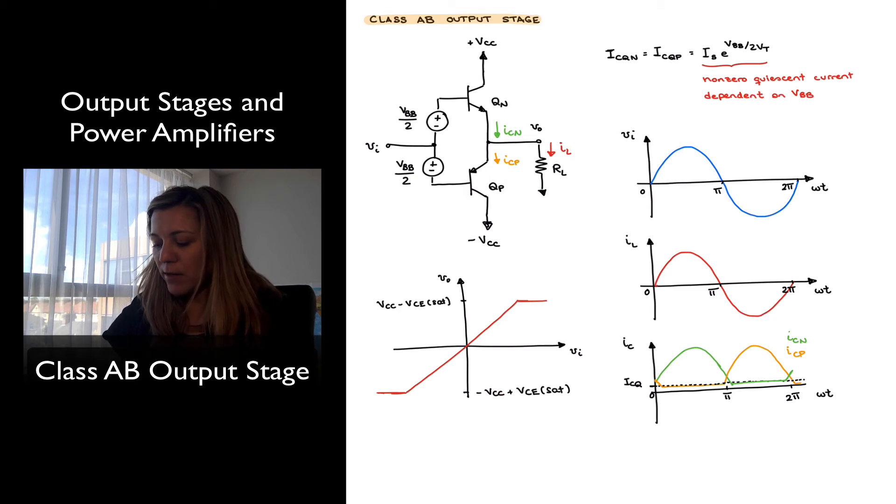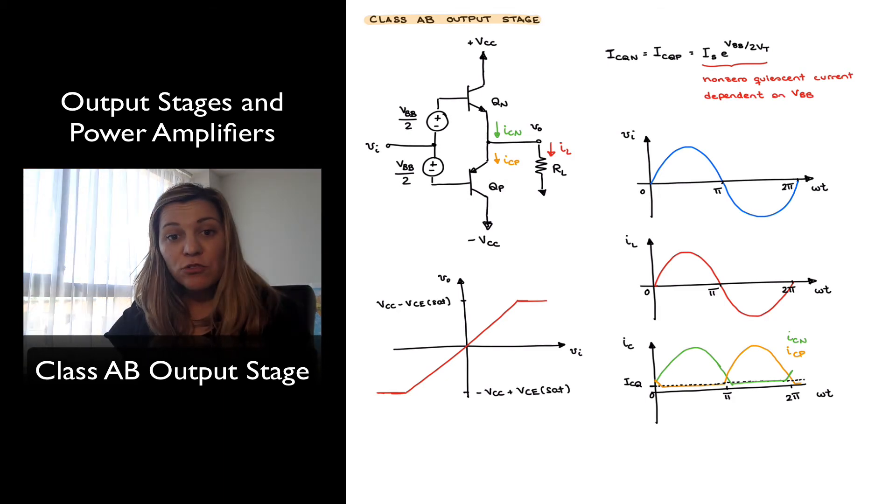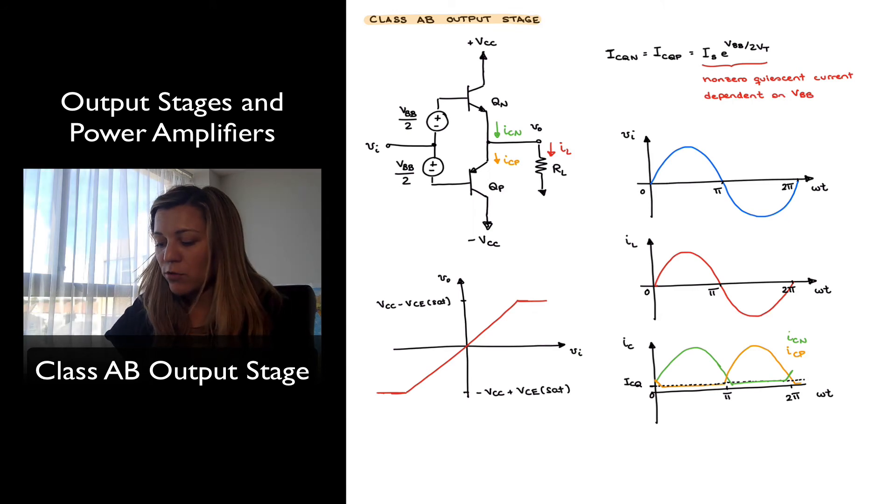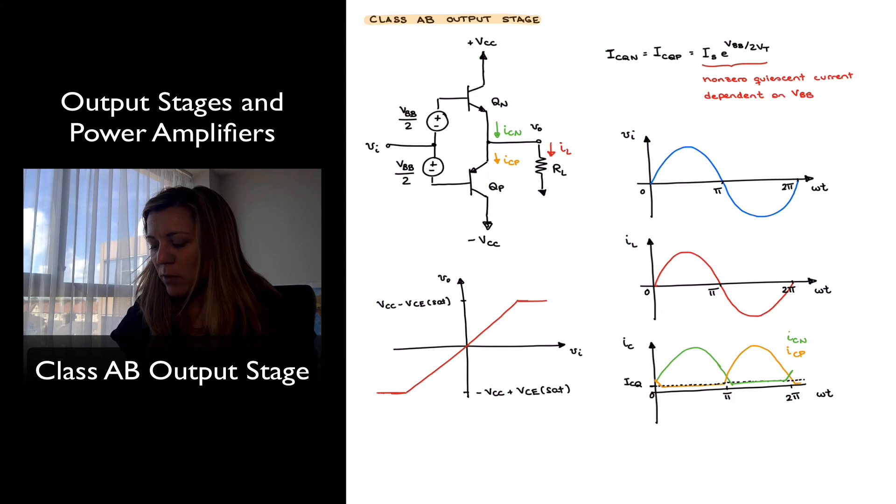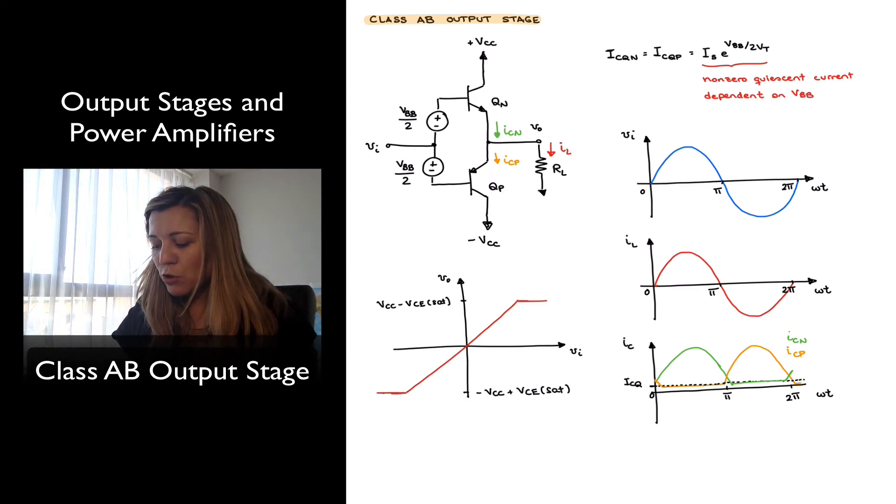And so notice that in this case, I will have my IC for my N and P transistors. And as expected, during the positive half cycle, my VIN will go up, my VOUT goes up. My transistor QN conducts current, but notice that my transistor QP never gets really turned off. It's still conducting the quiescent current.